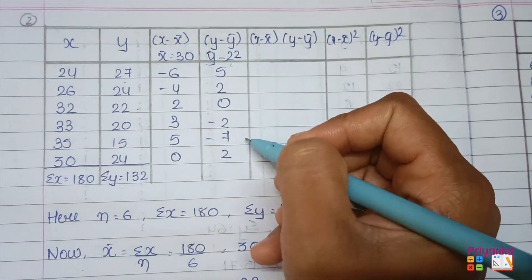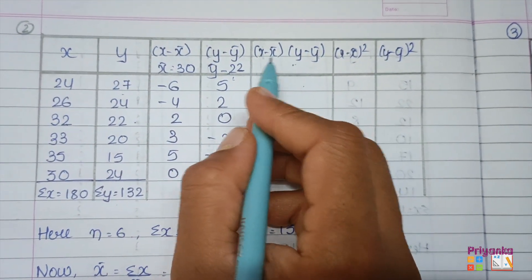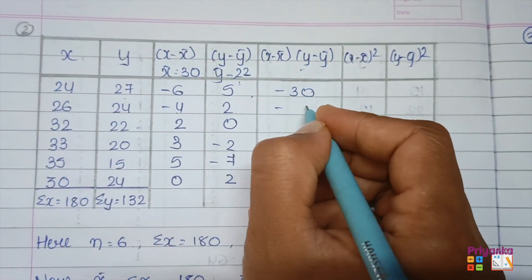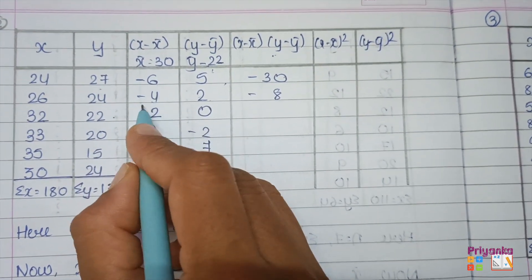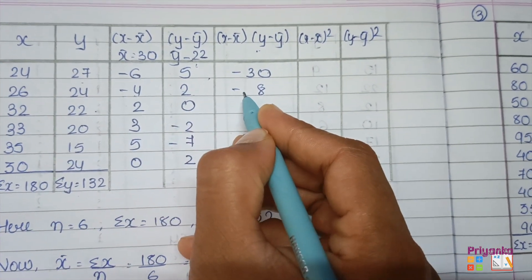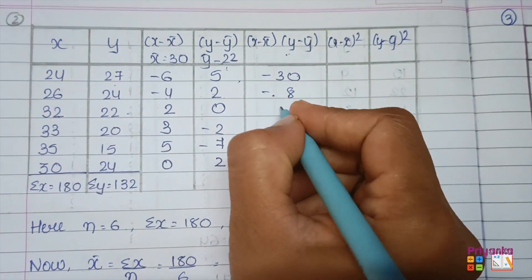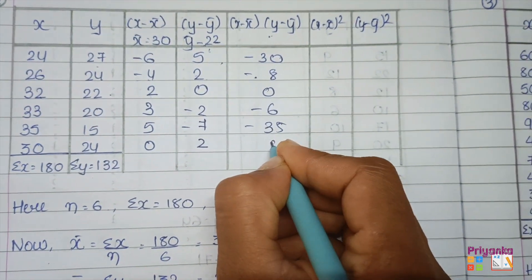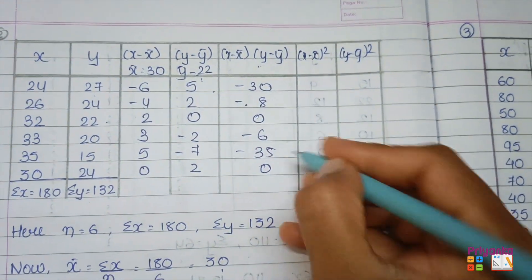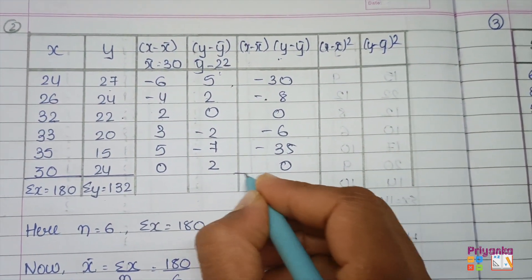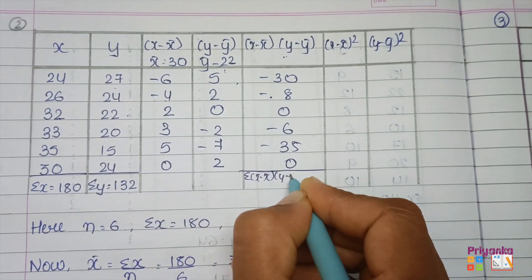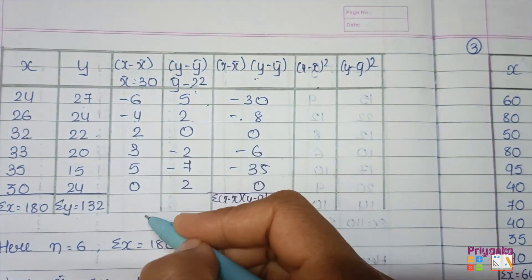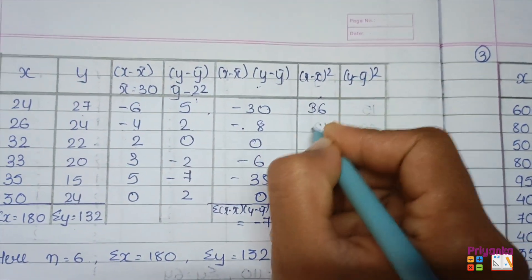Multiplying the (x − x̄) and (y − ȳ) columns: −6 × 5 = −30, −4 × 2 = −8, noting that when only one column has a minus sign the product is negative. All the products come out negative, giving Σ(x − x̄)(y − ȳ) = −79.